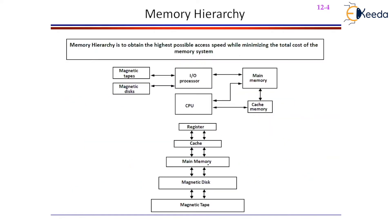The data will get stored in the secondary memory devices. When you want to execute a program, that program must be transferred to the main memory. Initially, CPU wants to access the data from the cache memory, but cache memory initially doesn't have anything. So CPU will access the data directly from the main memory. Meanwhile, the data will also be transferred to the cache memory for future references, because the data accessed currently may also be accessed in the near future.